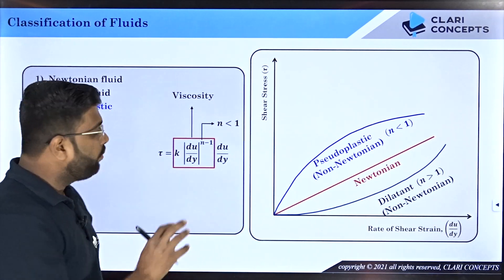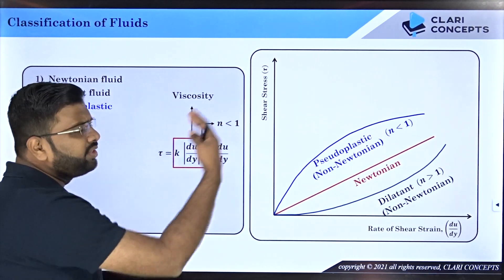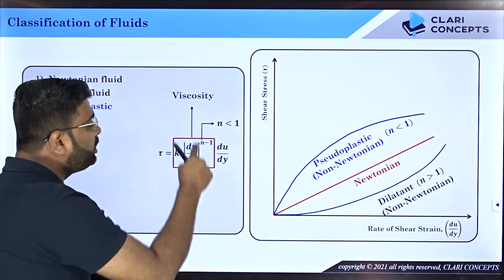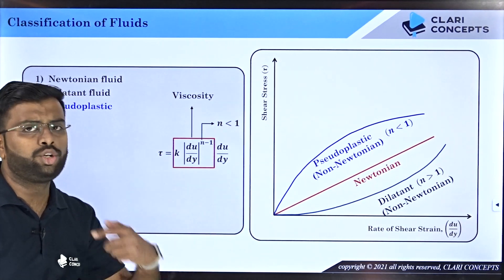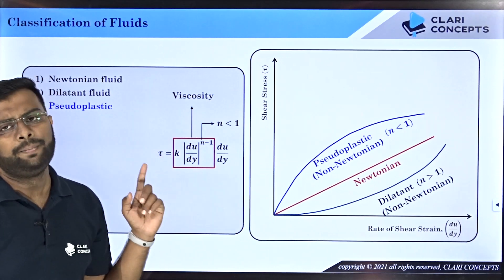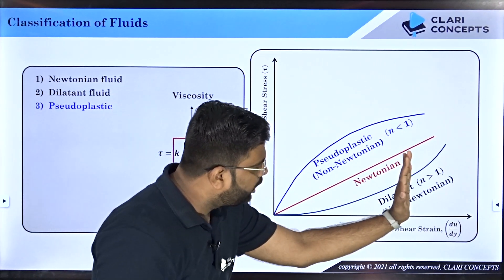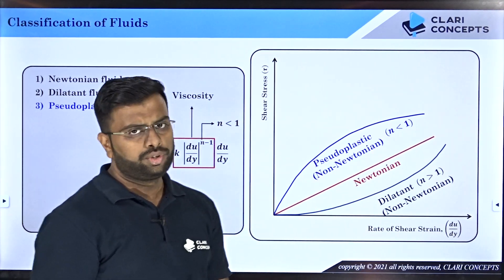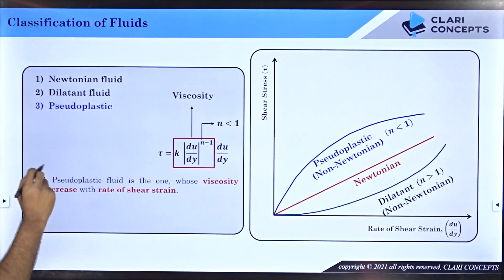Since n < 1, the exponent n−1 is a negative number, meaning du/dy appears in the denominator of the viscosity expression. As du/dy increases, the denominator increases and the overall viscosity decreases. Therefore, at a larger rate of shear strain, pseudo plastic fluids have lower viscosity.